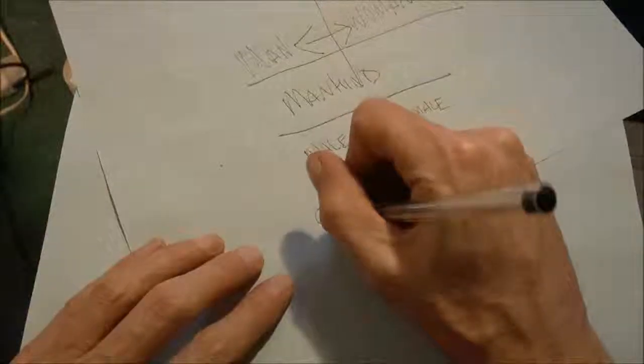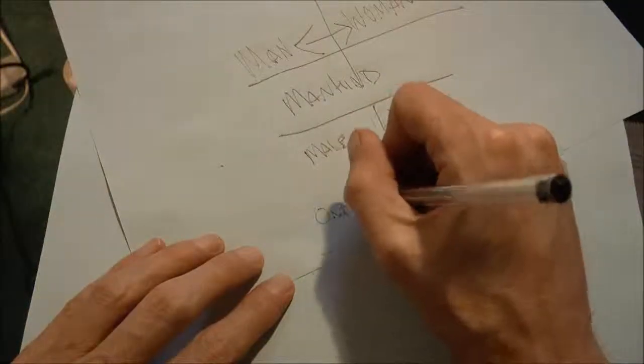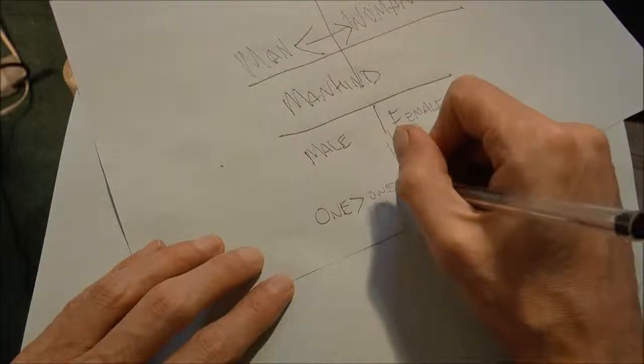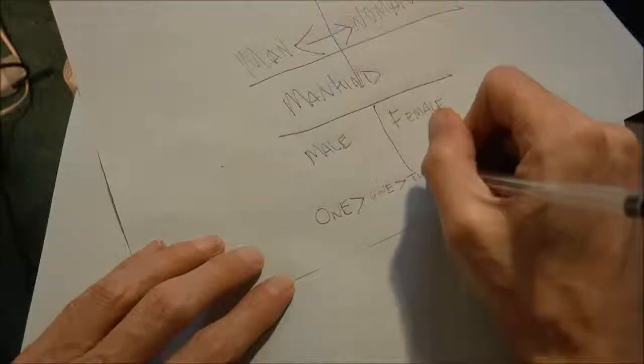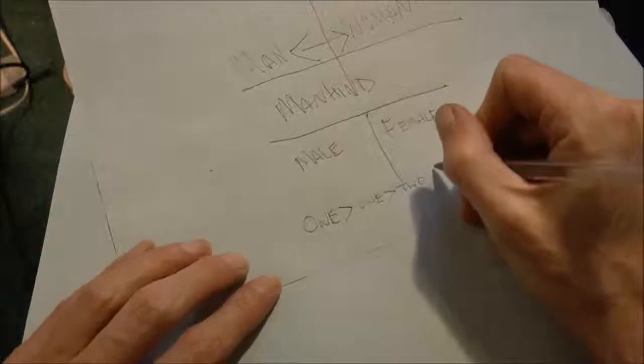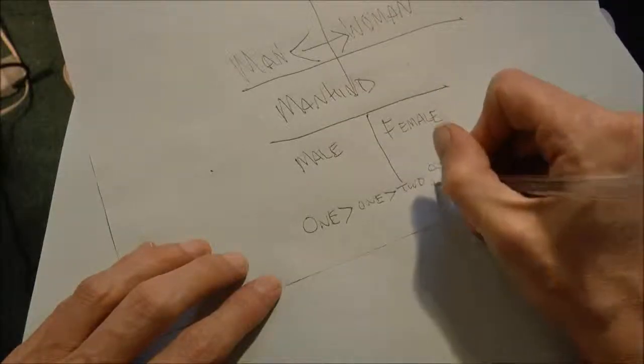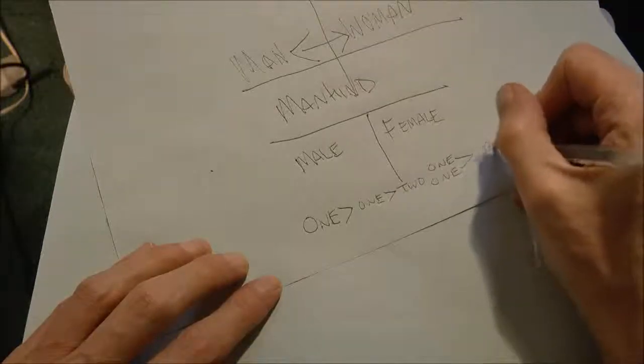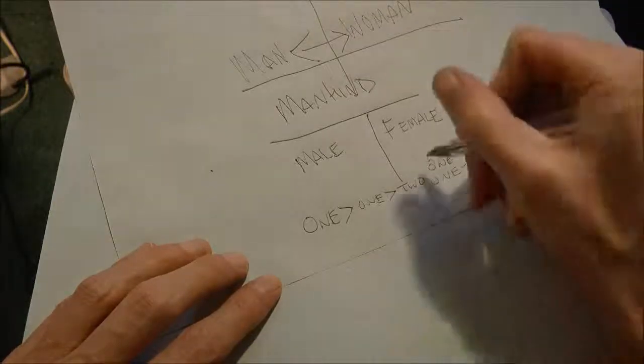We have one God, he produced one man, and then from that one man became two. And those two produced one. See?